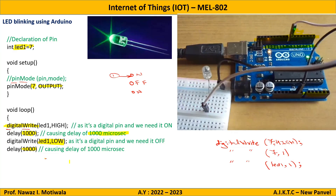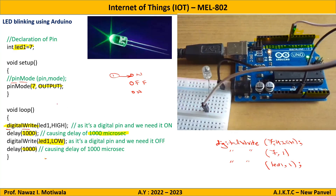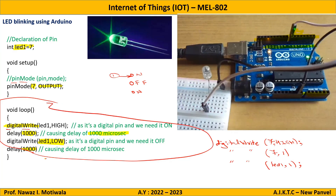So our sequence is achieved — we have turned the LED on for some time and kept it off for some time. Closing the bracket completes our program. Whatever you write in this void loop section will be executed multiple times — this loop will be executed again and again.